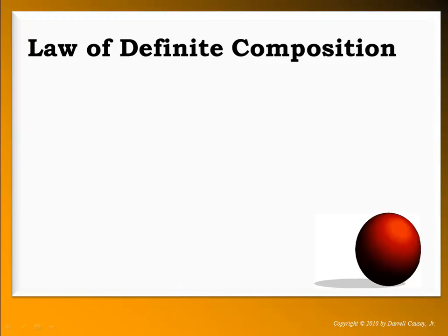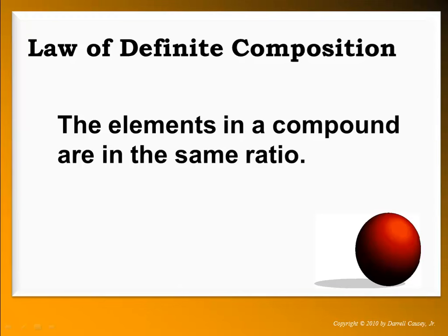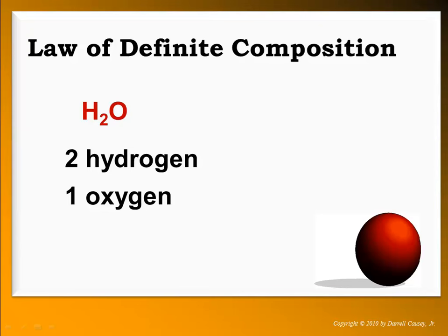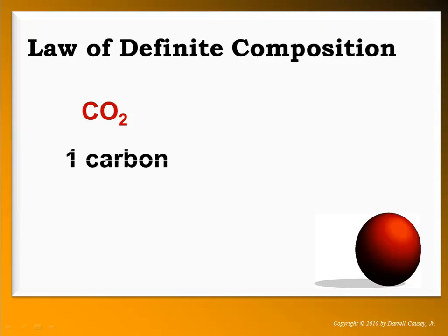Let's look at what the law of definite composition says. The law of definite composition says that the elements in a compound are in the same ratio. Something like H2O, water, is going to be two hydrogen and one oxygen — and it's always going to be two hydrogen and one oxygen, a definite composition. Or something like carbon dioxide is always going to be one carbon and two oxygen.